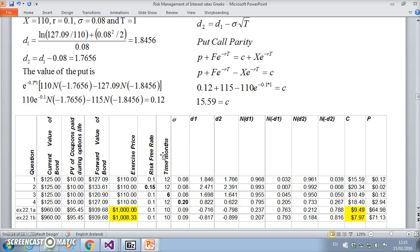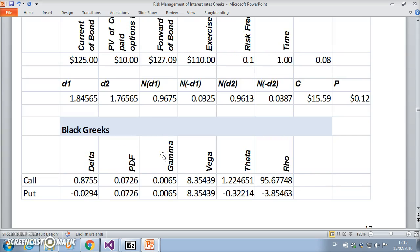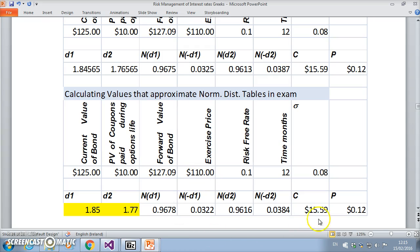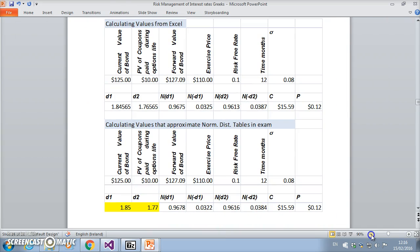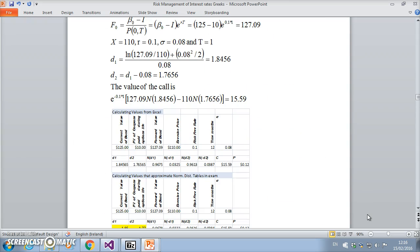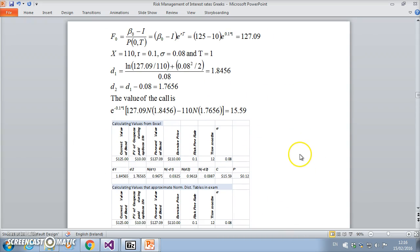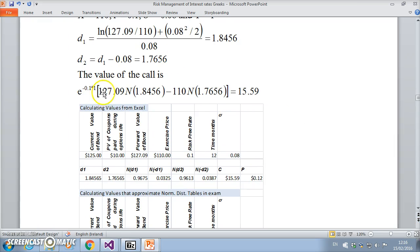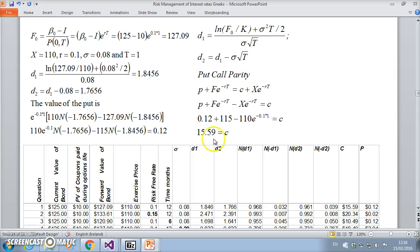We might want to take that into account when we're looking at these formulas—I haven't made explicit the time period, just that if it's one it tends to fall out. If we go back and have a look at just the standalone value of the call, we're getting this value here as 15.59, which is the same as if I had just used put-call parity.